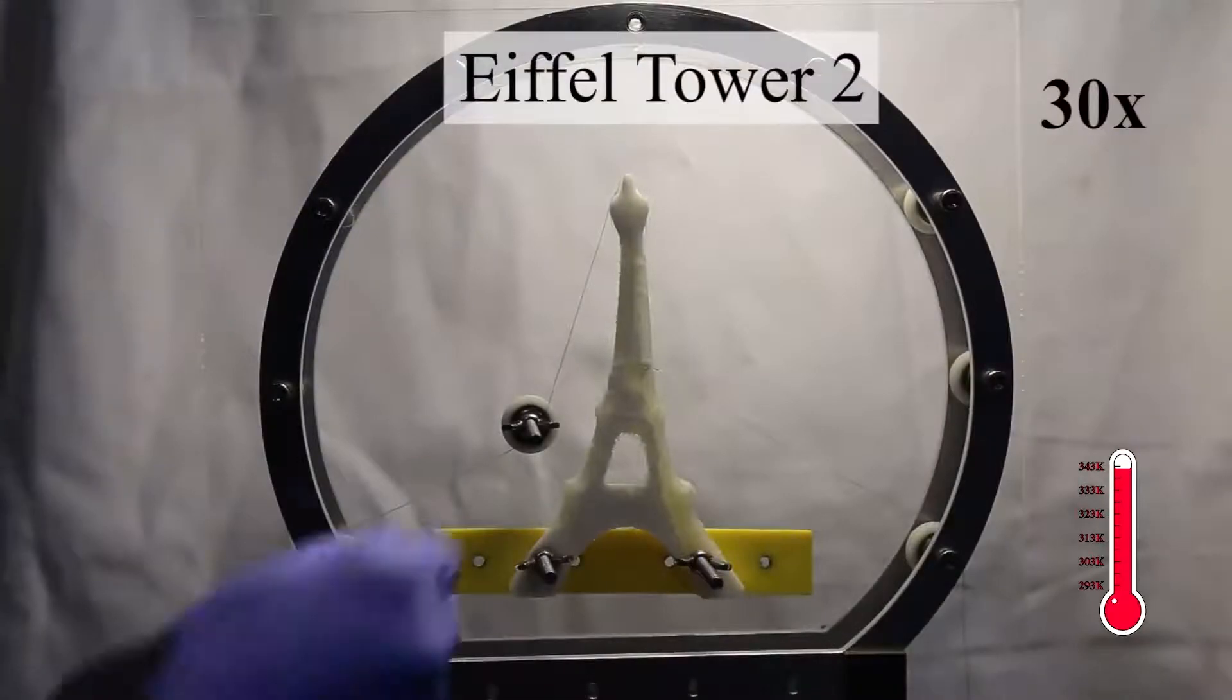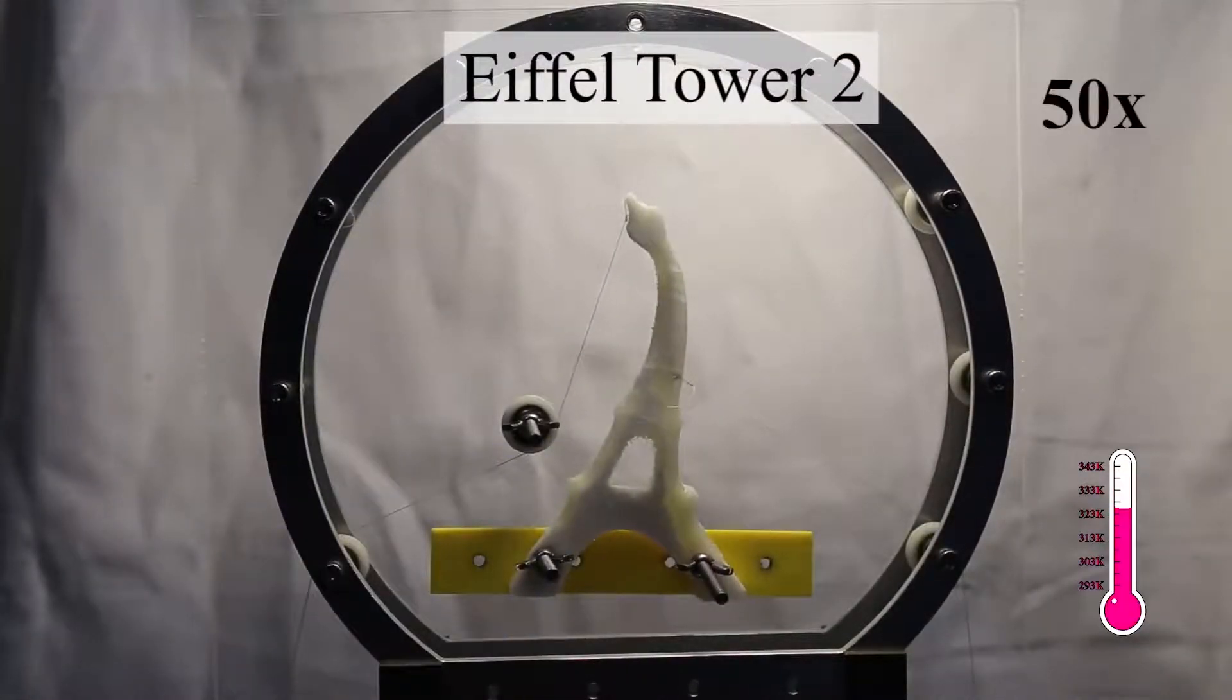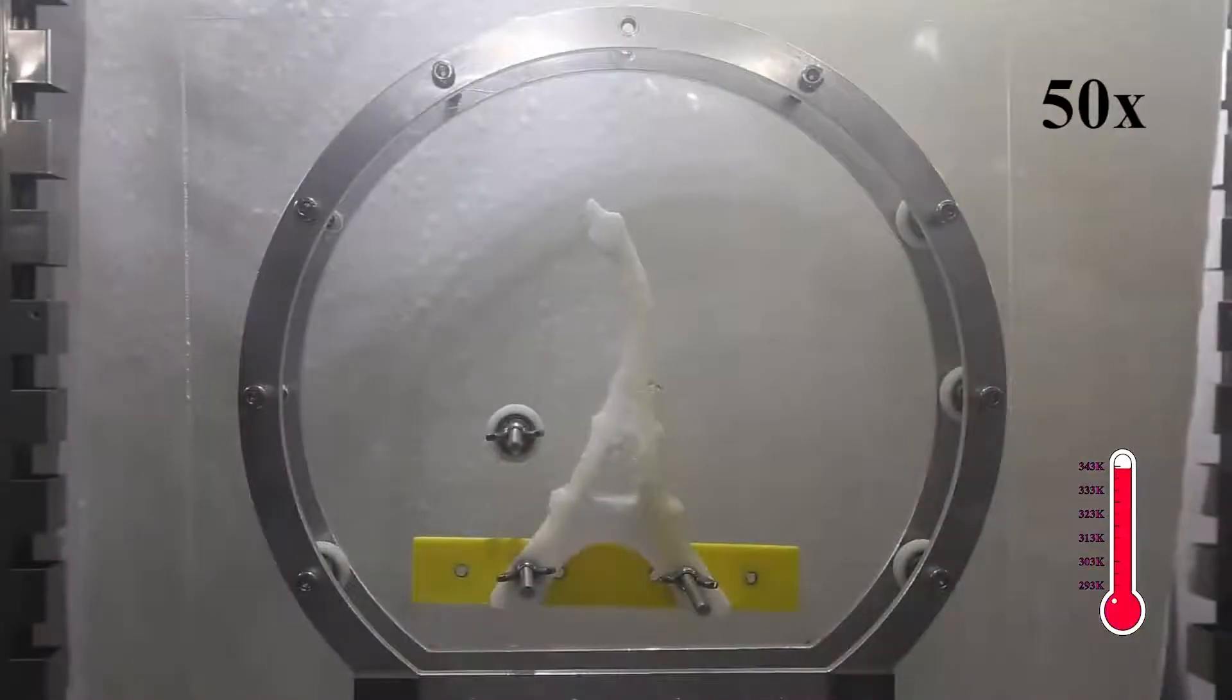This example shows another 4D printed Eiffel Tower object with a different target shape. Our method generates a different material distribution and more external forces are conducted to perform the deformation.